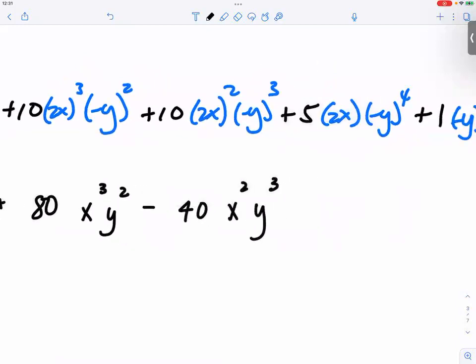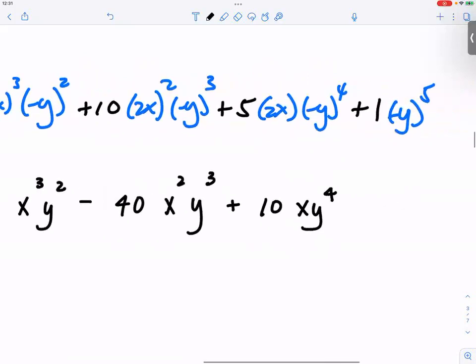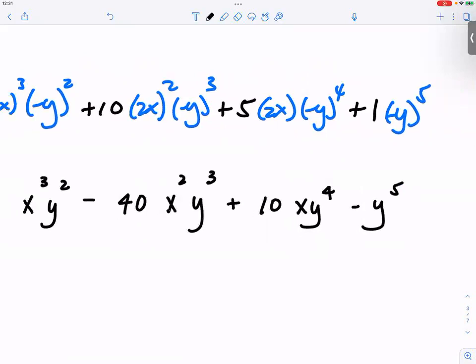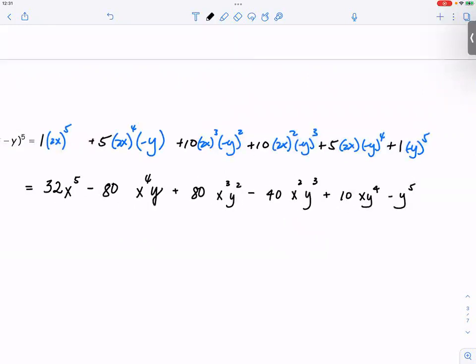Then you have a plus because the negative y is squared to the fourth power. So you have x, y to the fourth power. And you have 5 times 2, that's 10. The first term and the last term, they are usually the most pleasing ones to do because you don't do much.